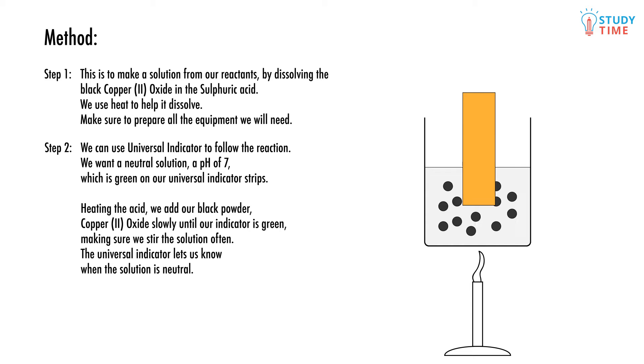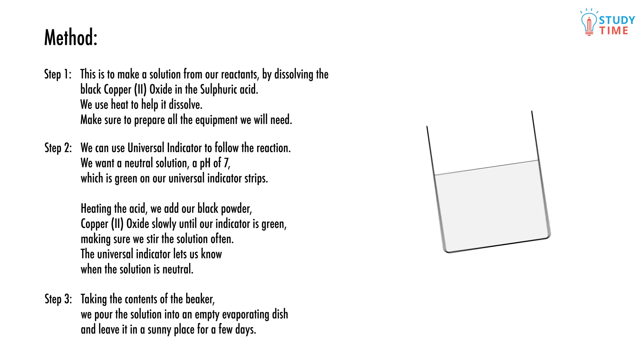Heating the acid, we add our black powder copper (II) oxide slowly until our indicator is green, making sure we stir the solution often. The universal indicator lets us know when the solution is neutral.